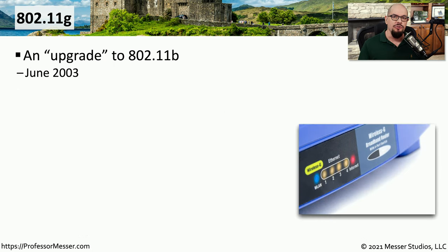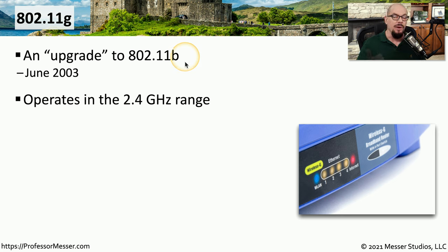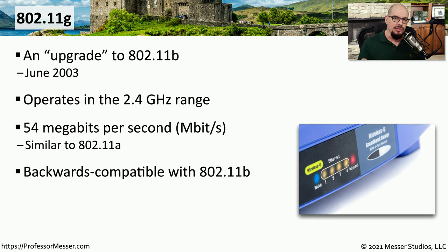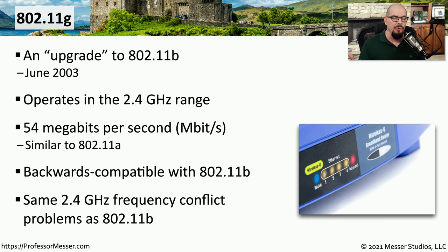In June 2003, the IEEE introduced a new version of 802.11 called 802.11g. This is effectively an upgrade to 802.11b — it operates in the 2.4 gigahertz range just like 802.11b, but at a higher speed of 54 megabits per second, matching the speed of 802.11a. It is also backwards compatible with 802.11b, so many 802.11g access points allow a compatibility mode where both B and G devices can connect. Unfortunately, at 2.4 gigahertz you have the same problems with limited frequencies and a large number of competing devices.